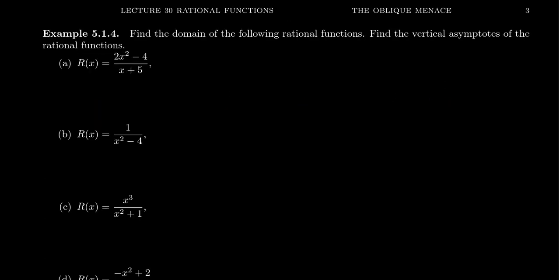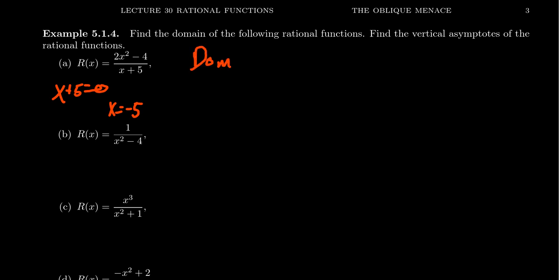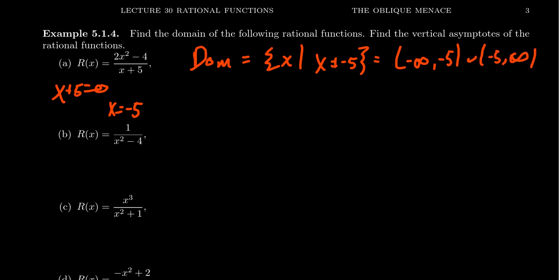To determine the domain of R(x) = (x² − 4) / (x + 5), the numerator never affects the domain. The domain comes from the denominator: setting it equal to zero, we see there's a problem when x equals negative 5. So the domain equals all real numbers x such that x does not equal negative 5, or in interval notation, negative infinity to negative 5 union negative 5 to infinity. The value x = −5 is excluded from the domain.